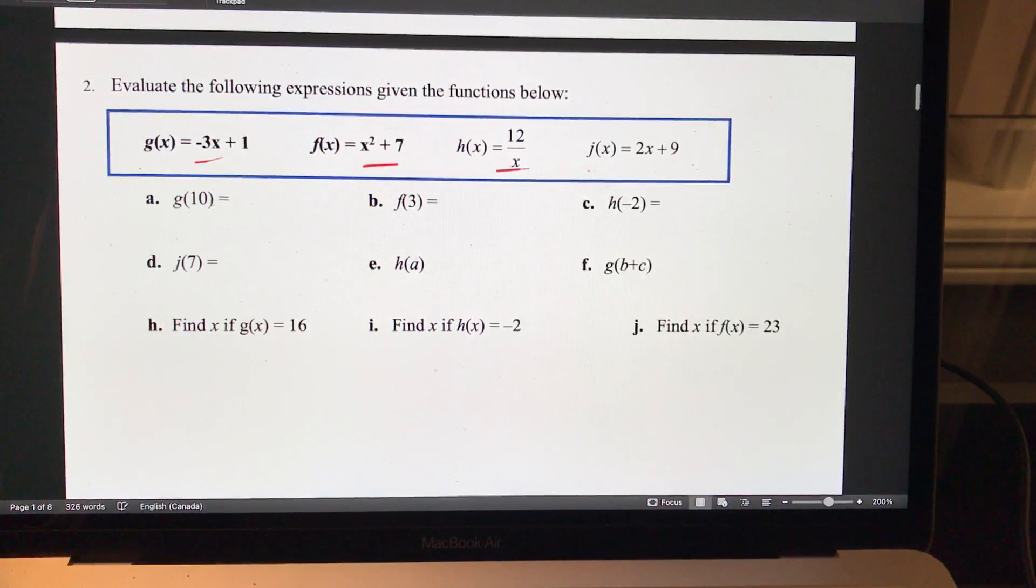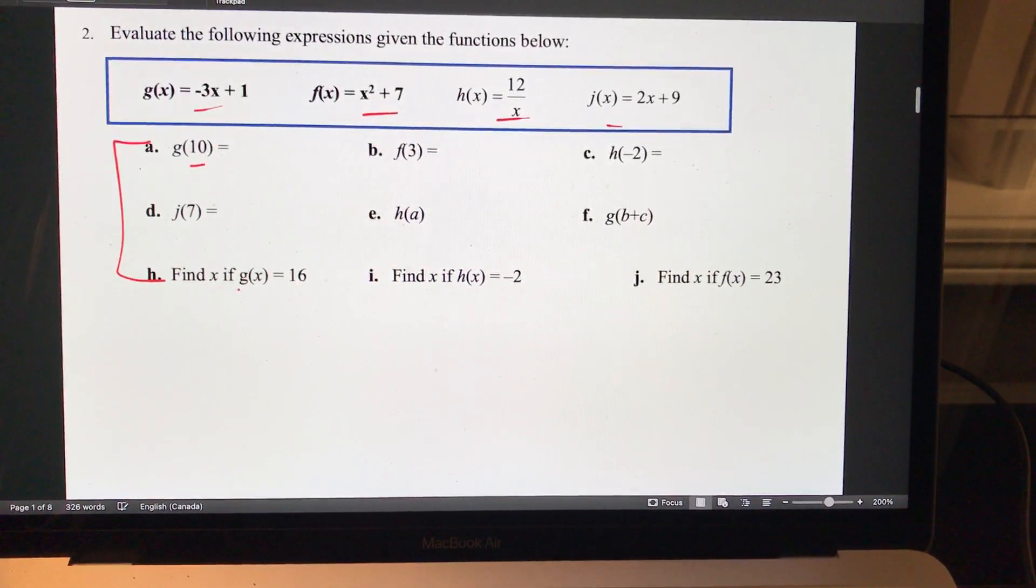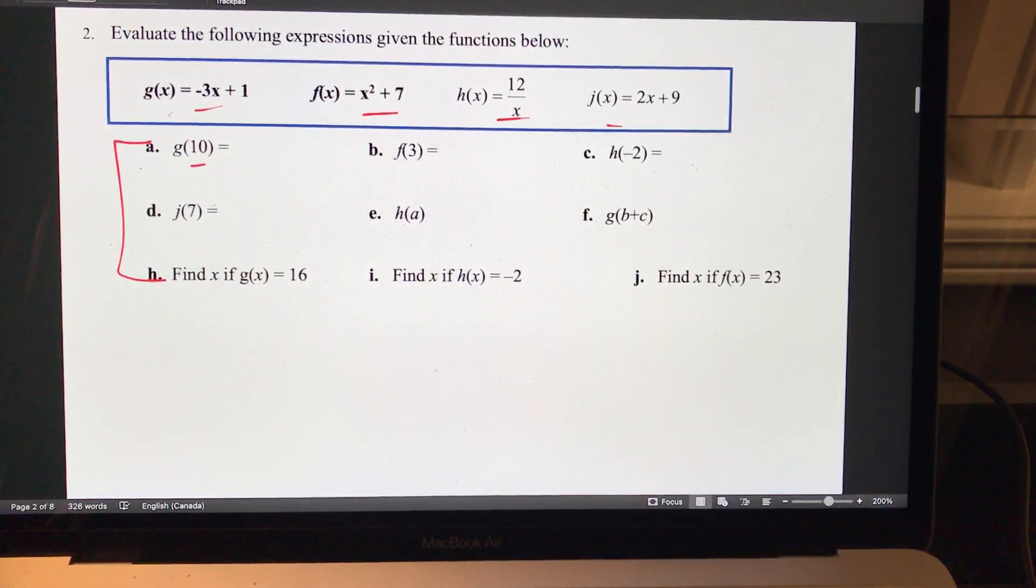Evaluate the following expressions. Given these four functions, figure out what the values of each function at the given value. Here, this is find x if g(x) is equal to 16. So I replace g(x) with 16, so it becomes 16 equals negative 3x plus 1. Solve for x.